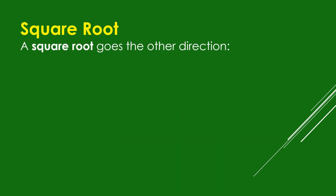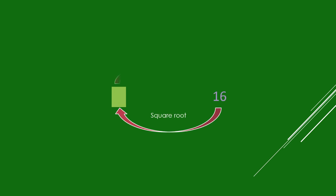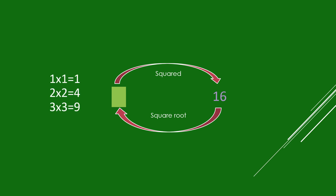A square root goes the other direction. 8 when squared is 64, so the square root of 64 is 8. For example, to find the square root of 16, think of a number when multiplied by itself will give 16. Let's try: 1×1=1, 2×2=4, 3×3=9, 4×4=16. The answer is 4.